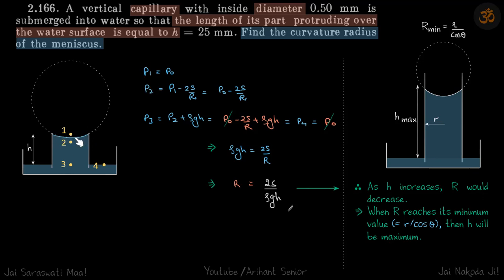Let's calculate the radius of the meniscus by equating pressures. We set p1 equal to p4 going through this route: p0 minus 2s/R plus ρgh equals p0. Replacing p1 and p4 by p0, the p0 terms cancel, giving us capital R equals 2s divided by ρgh.